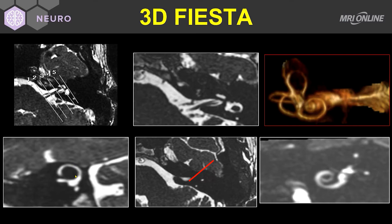These sections can be taken not only in multi-planar view, but we can also reconstruct in a 3D format and make MIP images or 3D volumetric images. Here you're nicely seeing the superior semicircular canal, the lateral semicircular canal, the posterior semicircular canal, and even the turns of the cochlea in a three-dimensional reconstruction.